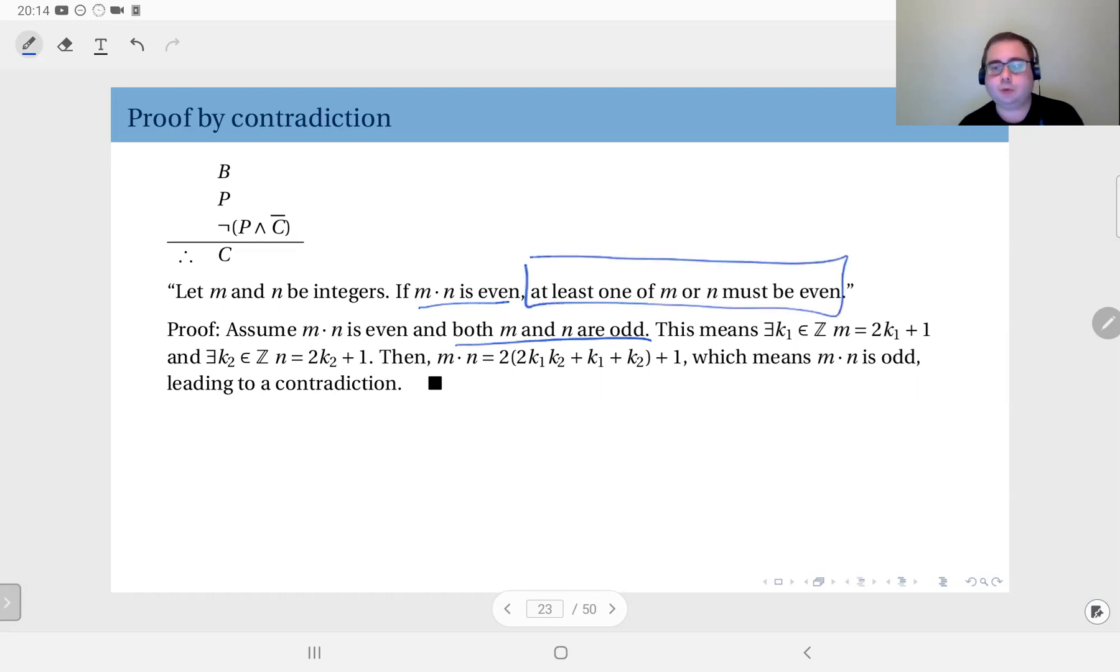of this conclusion that we are trying to prove. We are going to show that this negation together with this premise is going to lead to a contradiction, so that the conclusion must be true.